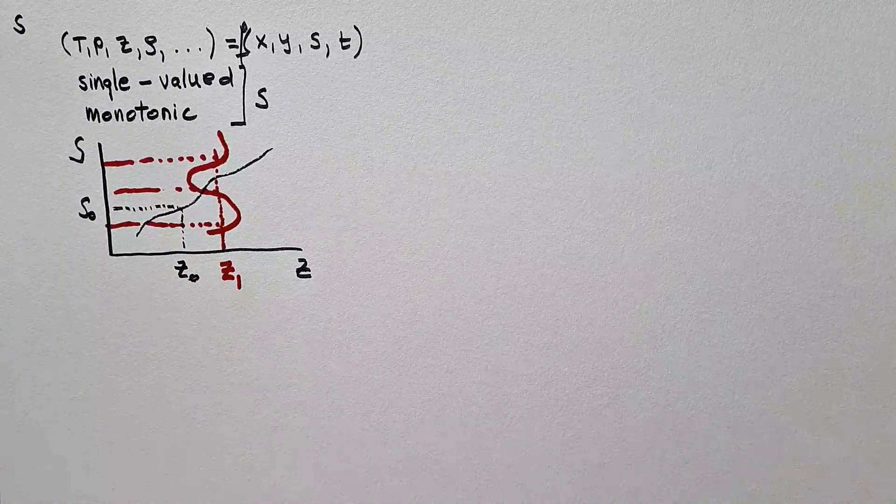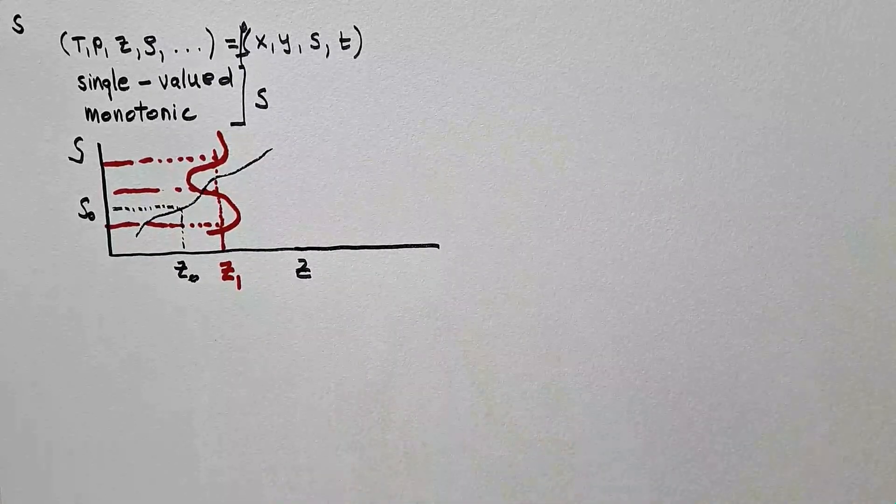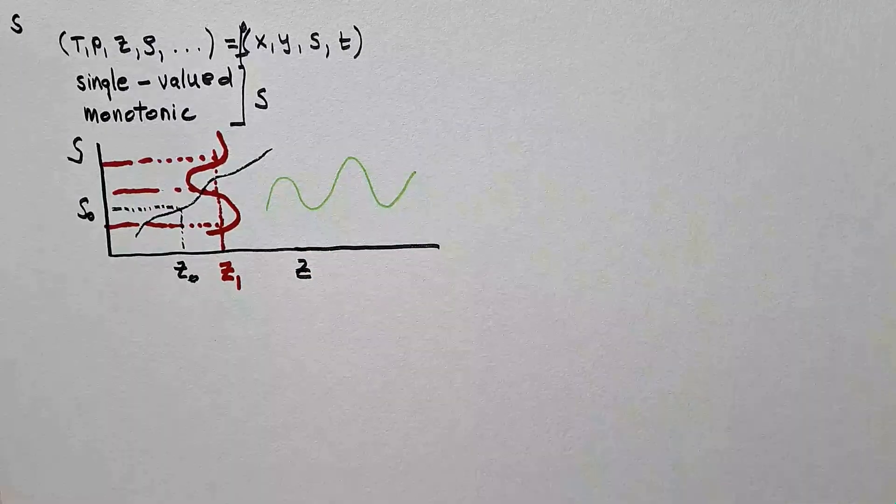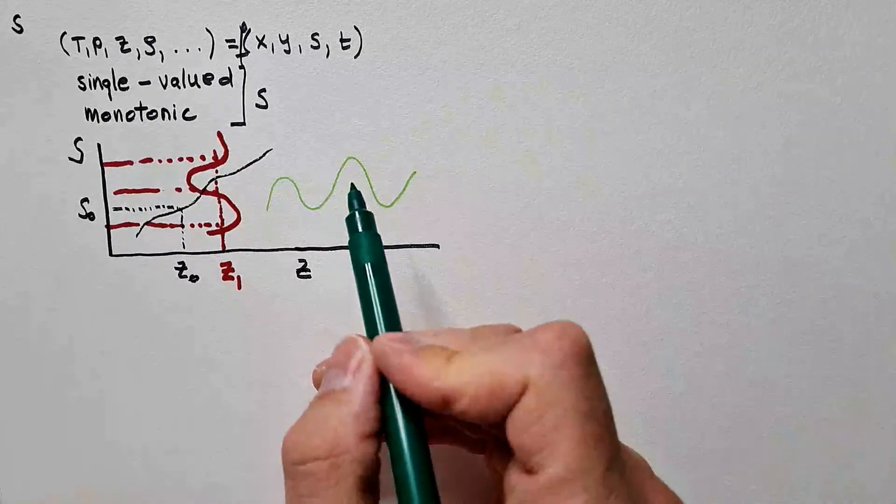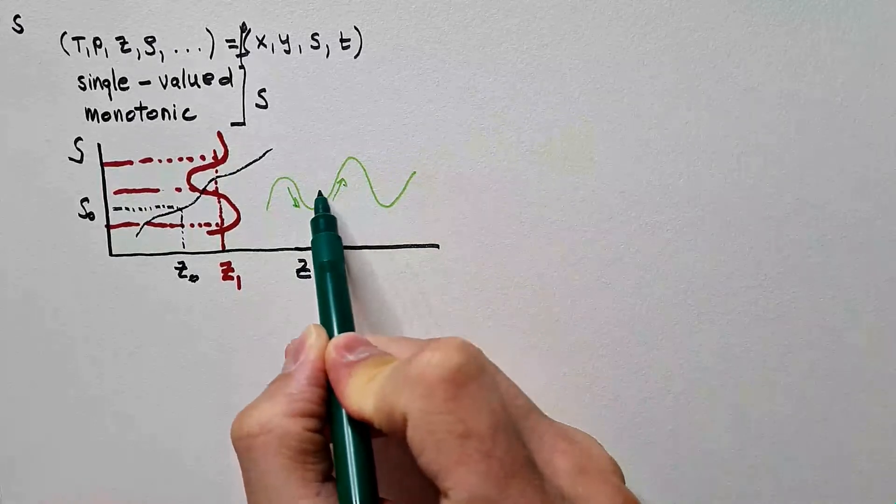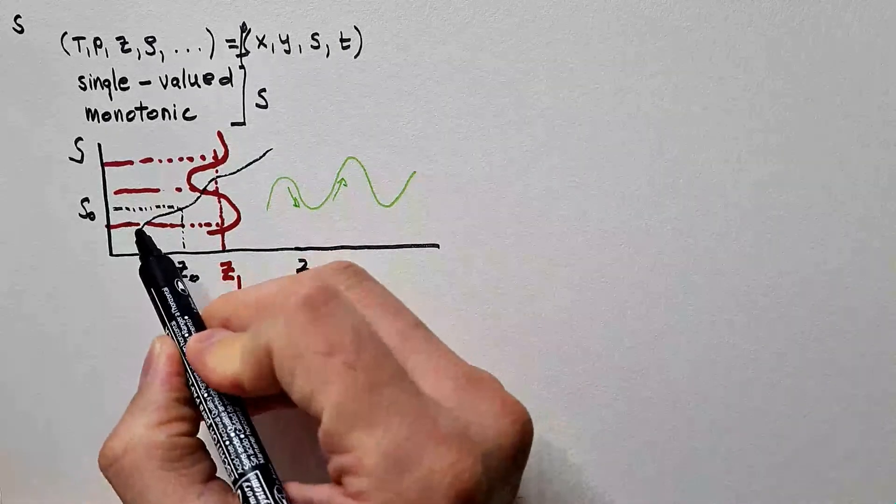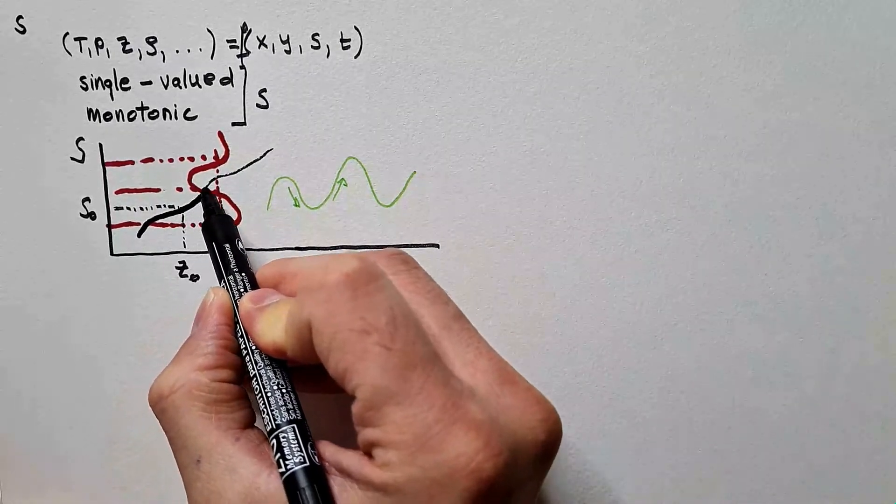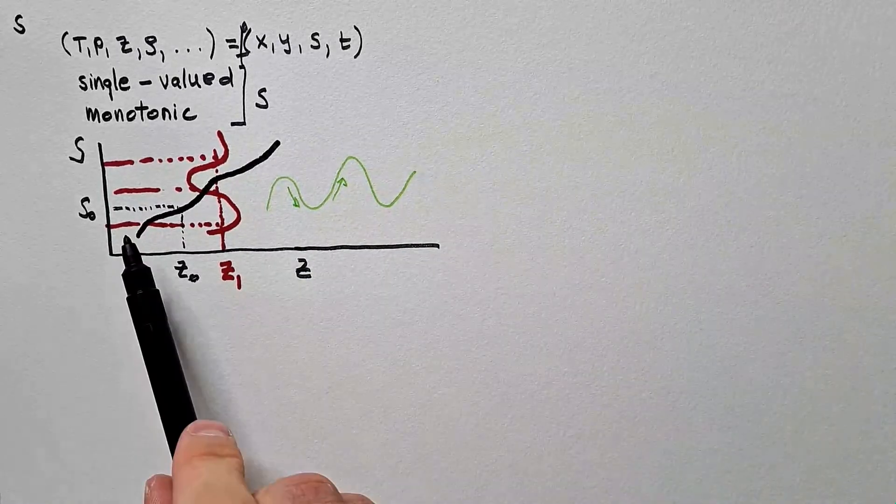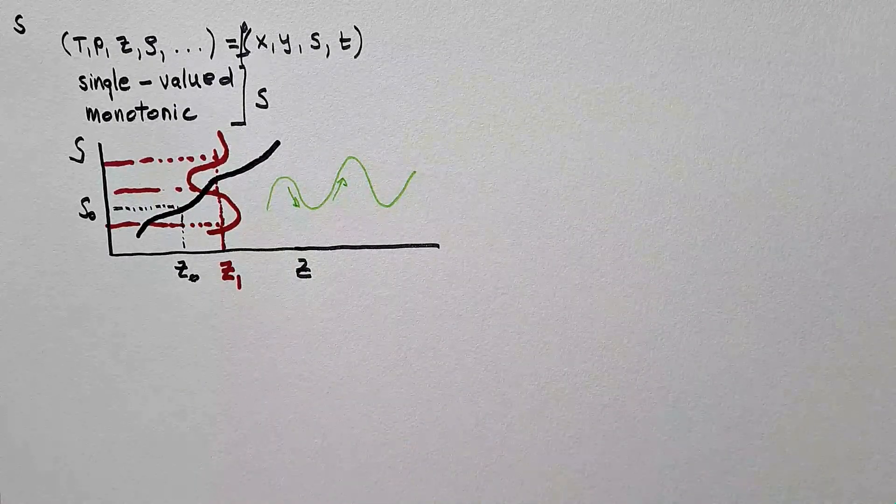What would be an example of non-monotonic function? Well, let me show it here if I extend this axis. This would be a good example of non-monotonic function. We see that it is decreasing here with height, then it is increasing, so it is changing the sign with height. However, this one is single-valued. So in this case, only this black one is a good candidate, because it is always increasing with the height and it is single-valued, as we demonstrated.